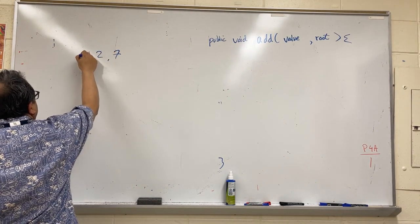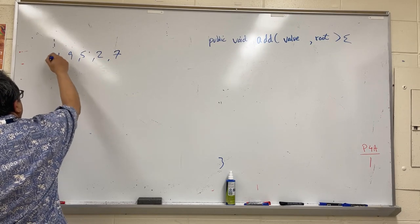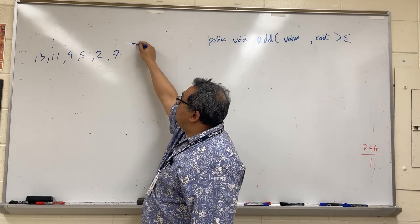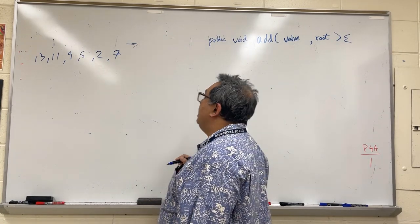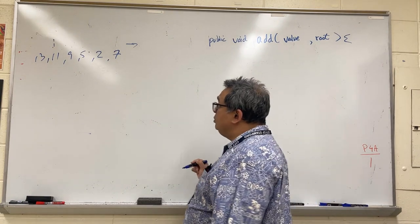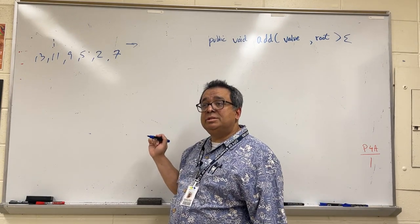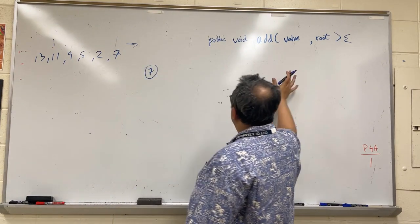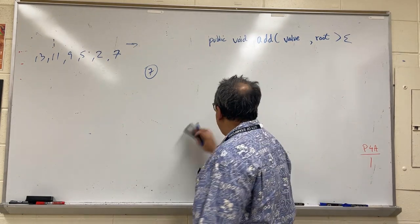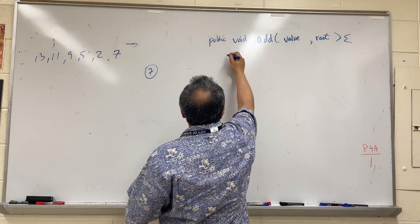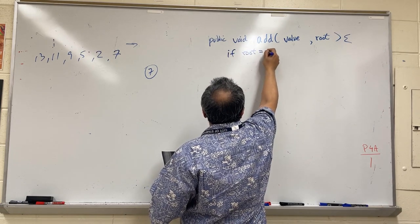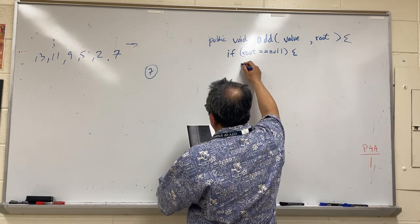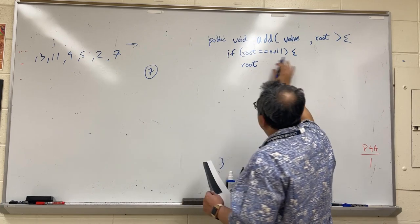Let's say we get some numbers: seven, two, five, nine, eleven, thirteen. The stream is going this way, so seven is the first number we encounter. What are we going to do with the seven? We're going to set it as the root. In terms of our pseudocode, we can say that if the root is equal to null, what we want to do is set the root — we're going to put the value in the root.